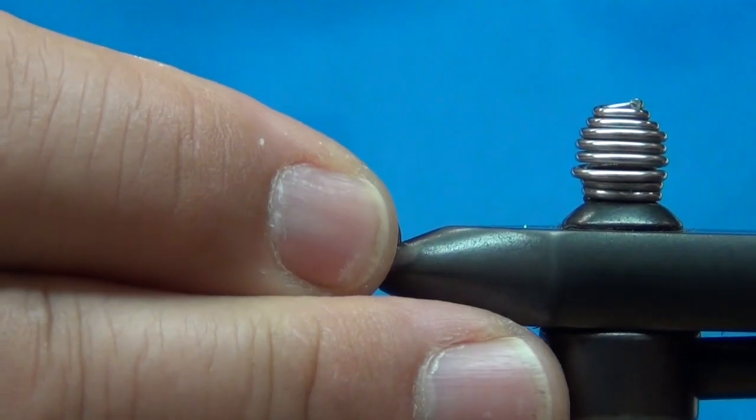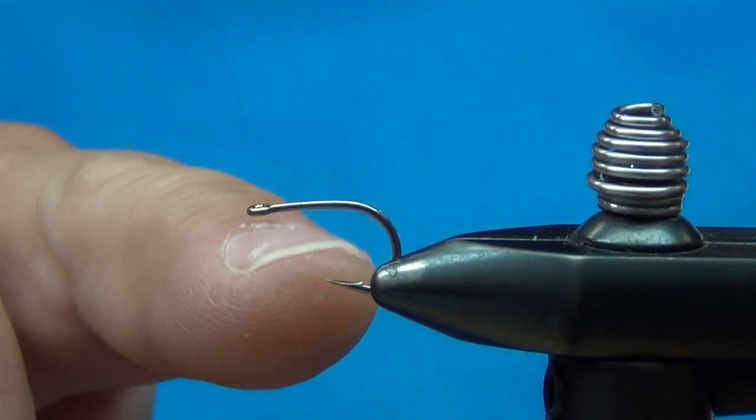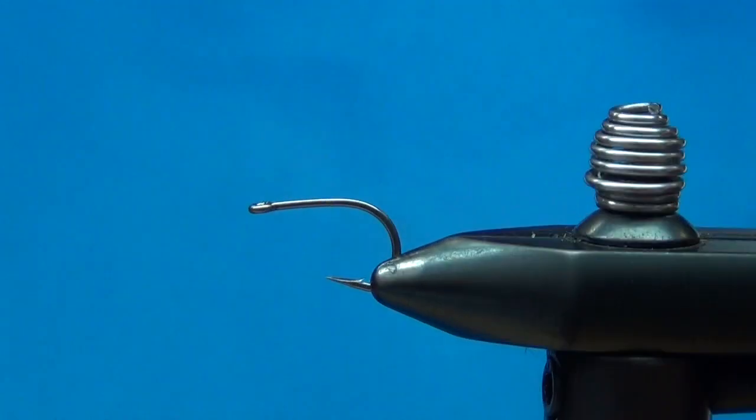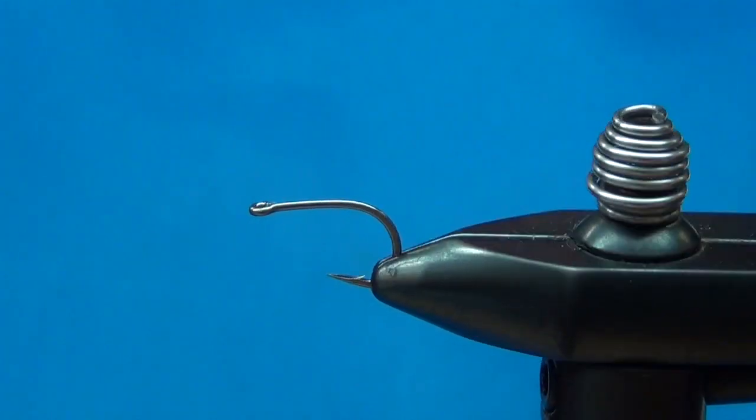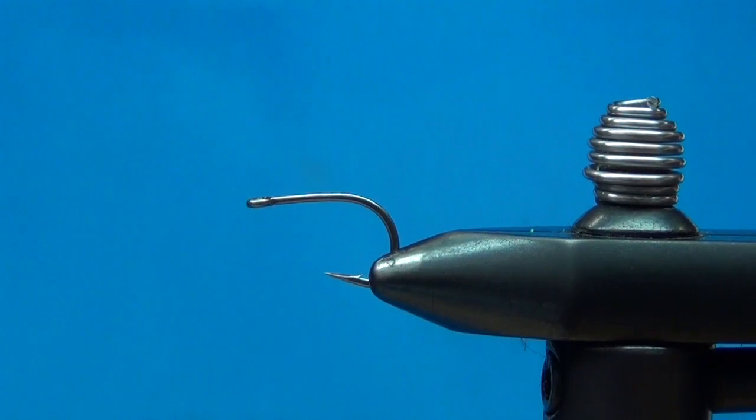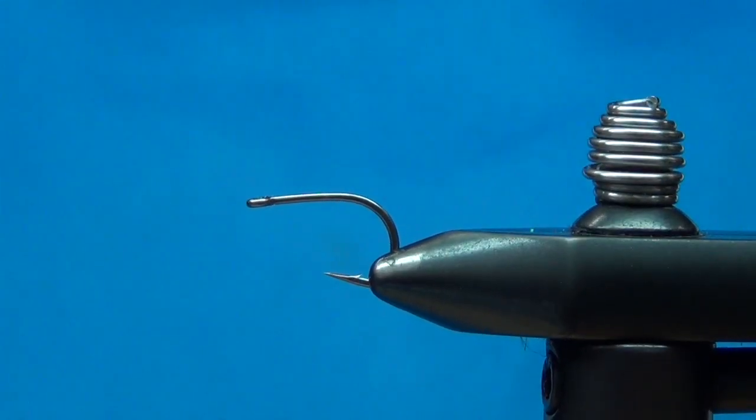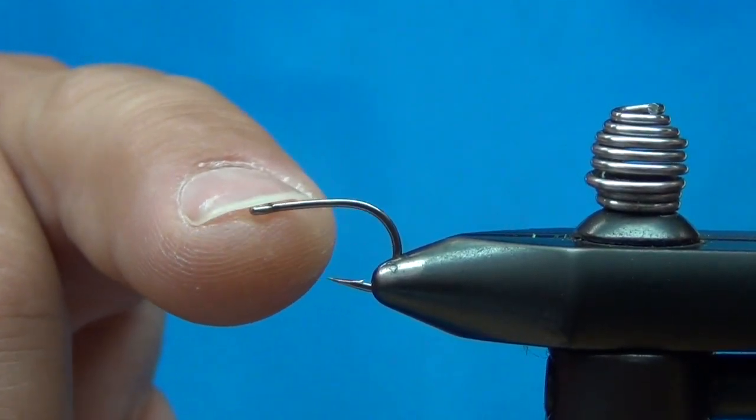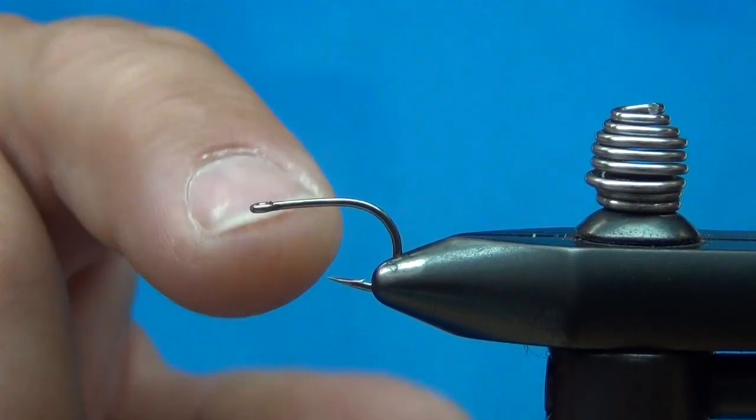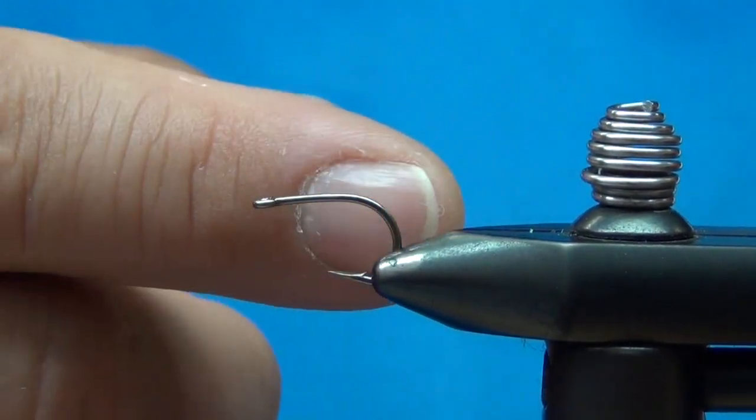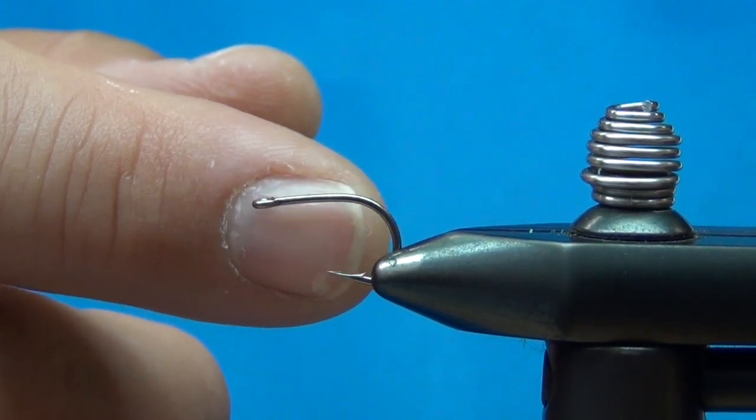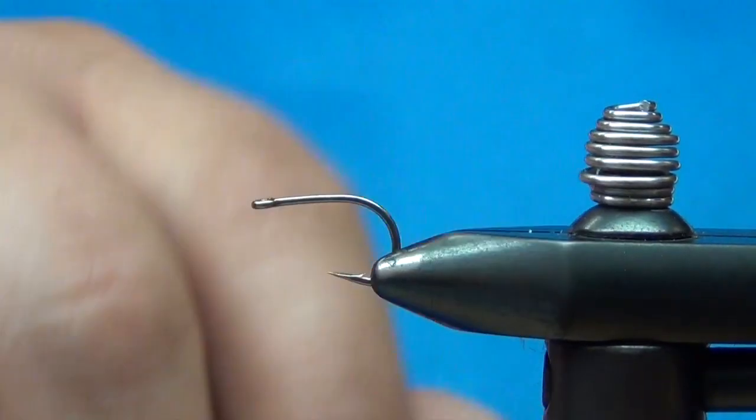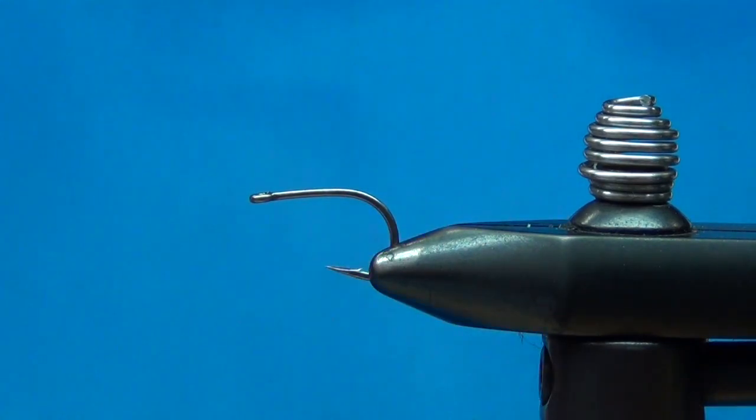This is the Daiichi. I love Daiichi, tie a lot of stuff on Daiichi hooks. The people up at Angler Sport Group are great people. This is the x510 steelhead hook, super strong. This is size 10, about the size of my finger. This is a good size that's been proven for us.